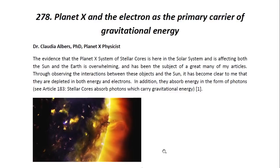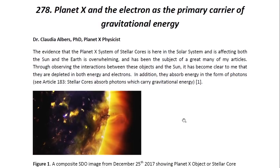Now, the evidence that the Planet X system of stellar cores is here in the solar system and is affecting both the Sun and the Earth is overwhelming and has been the subject of a great many of my articles. Through observing the interactions between these objects and the Sun, it has become clear to me that they are depleted in both energy and electrons. In addition, they absorb energy in the form of photons. And you may look at Article 183 entitled Stellar Cores Absorb Photons which carry gravitational energy for more details.